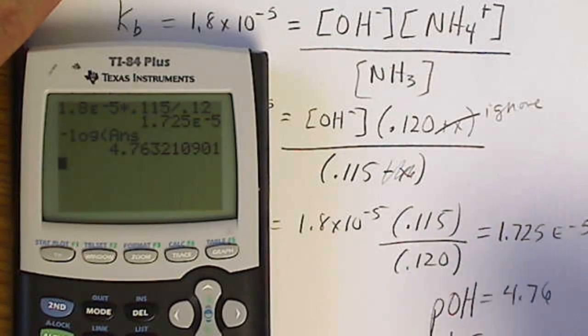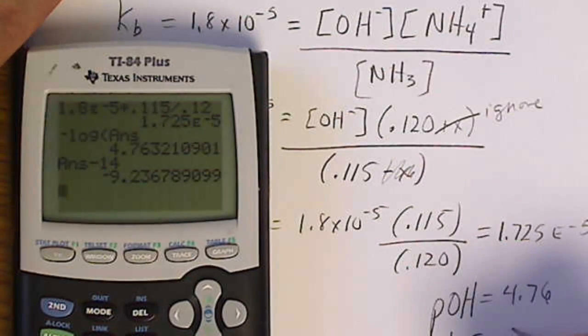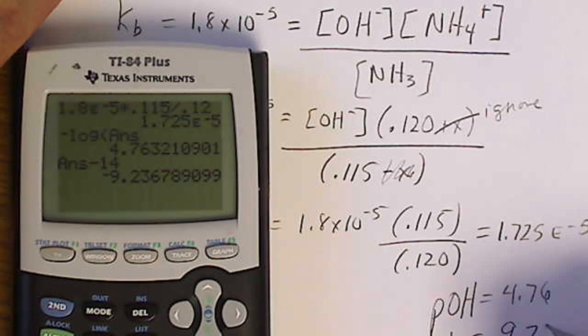So our pH is going to be 14 minus that number. And I just do it backwards and ignore the negative sign. So we'll run this to 2, 3, 7.